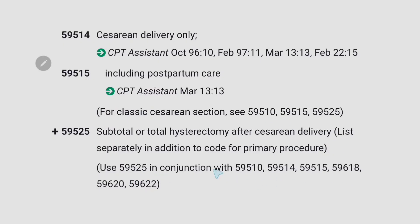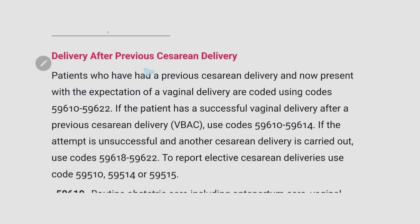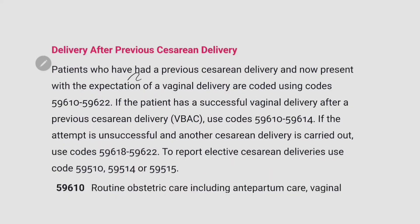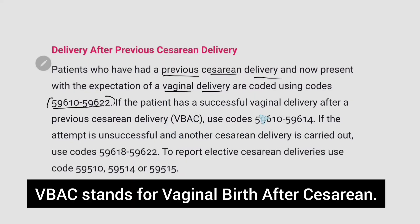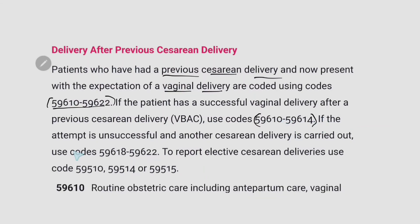Next is delivery after previous caesarean delivery — this is very important. Patients who have had a previous caesarean delivery and now present with the expectation of a vaginal delivery are coded using codes 59610 to 59622. If the patient has a successful vaginal delivery after a previous caesarean delivery (VBAC), use codes 59610 to 59614. If the attempt is unsuccessful and another caesarean delivery is carried out, use codes 59618 to 59622. To report elective caesarean deliveries, use codes 59510, 59514, or 59515.